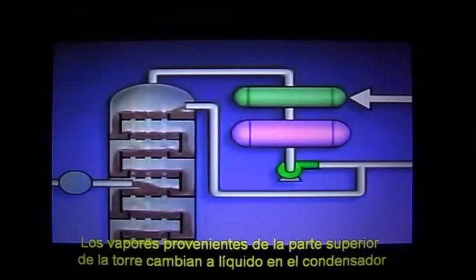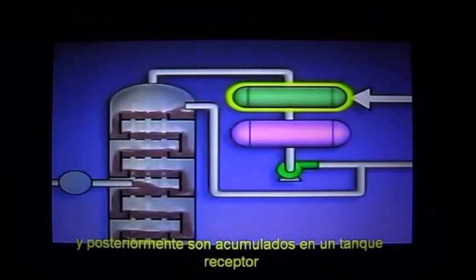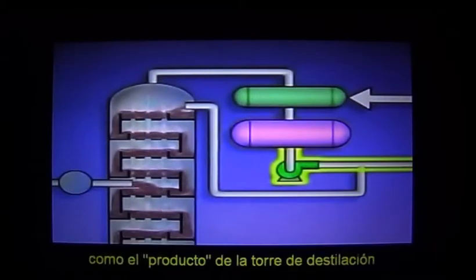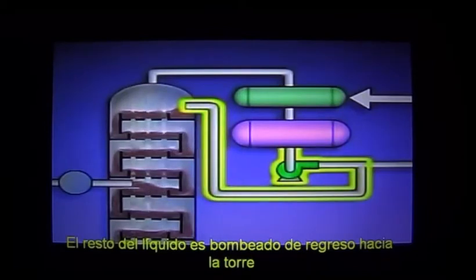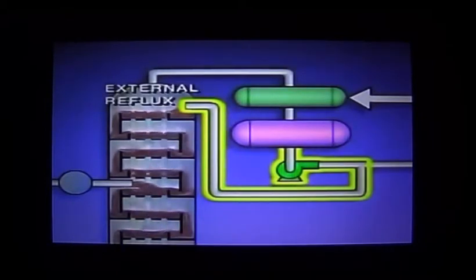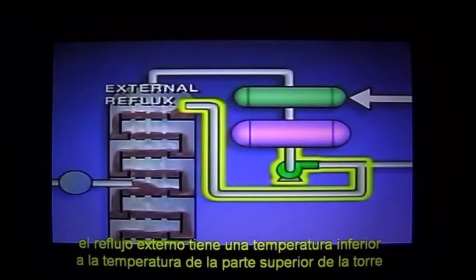The vapors coming off the top of the tower are condensed in a condenser and then collected in a receiver. Part of the liquid from the receiver is sent to storage or to other units in the plant as the tower's overhead product. The rest of the liquid is pumped back into the top of the tower. The liquid that's reintroduced into the tower is called external reflux.